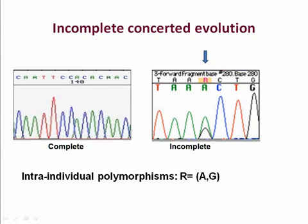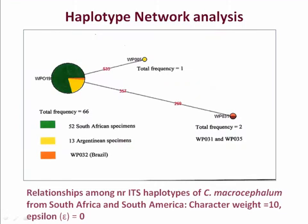In this picture I want to show you what I've just talked about — the polymorphism in this region. You notice that there are two bases called, as opposed to a sequence where only one base is called. This is what I just talked about — incomplete concerted evolution in the ITS region — and we call them intra-individual polymorphisms. This is an indication of a recent invasion.